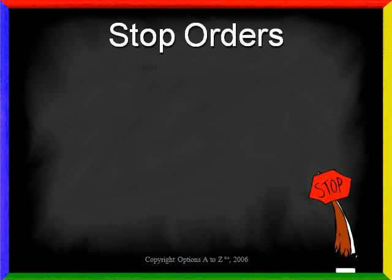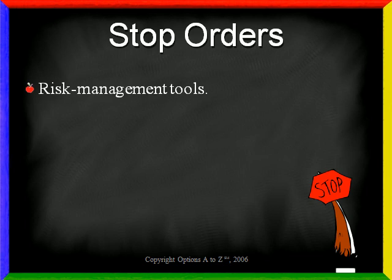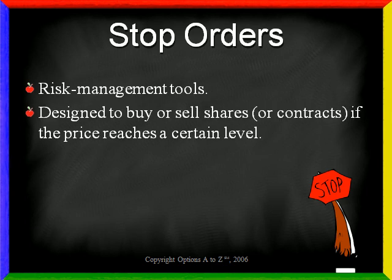Before I show you how to place stop orders in the Thinkorswim platform, let's quickly review what stop orders are and the two basic types I'll be talking about. Stop orders are one of many types of risk management tools available to you. They are designed to buy or sell shares or contracts — in the case of options — if the price reaches a certain level. For this video I'm just going to concentrate on placing sell stop orders, but be aware that you can use stops to close out short positions and to even create long and short positions.